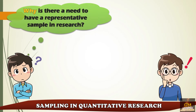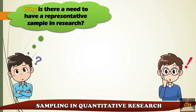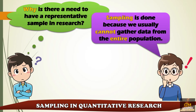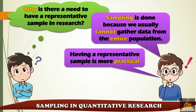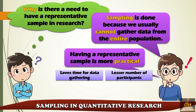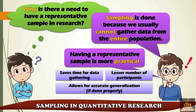Now, you might be wondering: why is there a need to have a representative sample in research? Sampling is done because we usually cannot gather data from the entire population — it's going to be taxing, impractical, and very much time-consuming. Having a representative sample is much more practical because it helps save time for data gathering due to the less number of participants, and if done properly, it allows for accurate generalization of whatever research findings we may have.